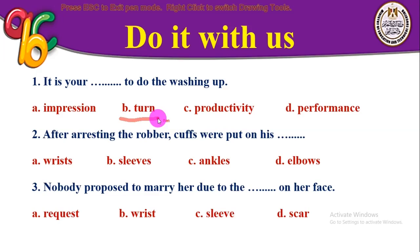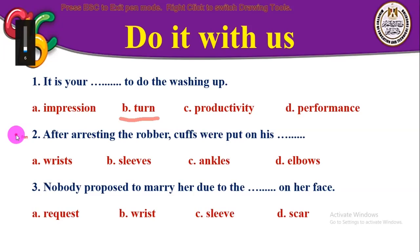Number two: 'After arresting the robber, cuffs were put on his _____.' Usually they put cuffs on the wrists, sleeves, ankles, or elbows — where do the police put handcuffs? Since they are called handcuffs, they go on the wrists — on the criminal's wrists. The correct answer is wrists.